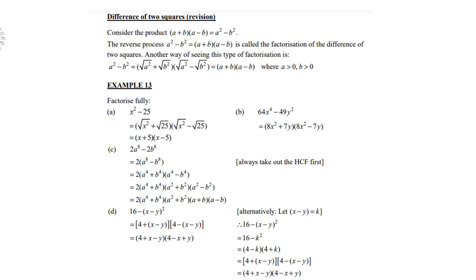Look at D: 16 - (x - y)². Is 16 a square? Yes, it is 4². Is the bracket (x - y) a square? Yes, it is a square. So there you are: square root of 16 is 4, square root of (x - y)² is (x - y). So you repeat the bracket with a negative. You can either leave the round bracket or you can remove it. Or alternatively, you can use the k method again where you let (x - y) be k. But don't forget in the end you must reintroduce (x - y).